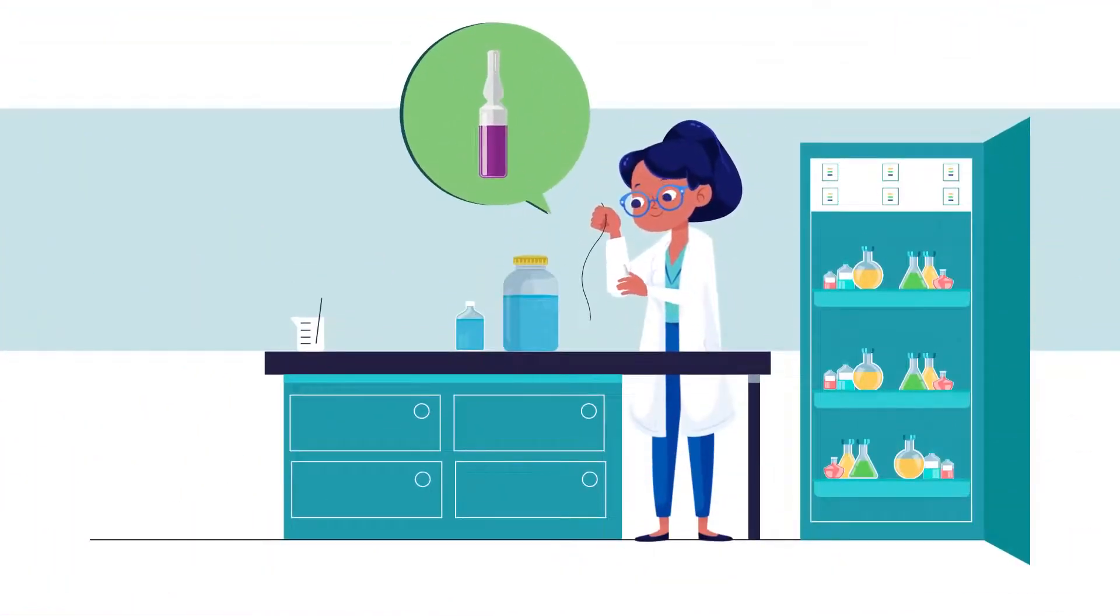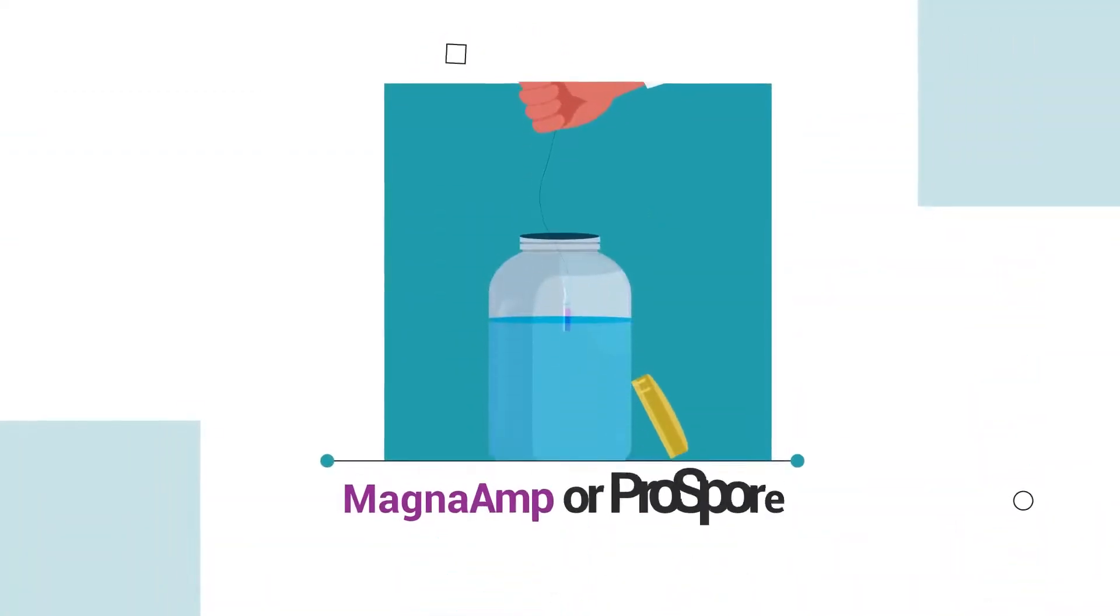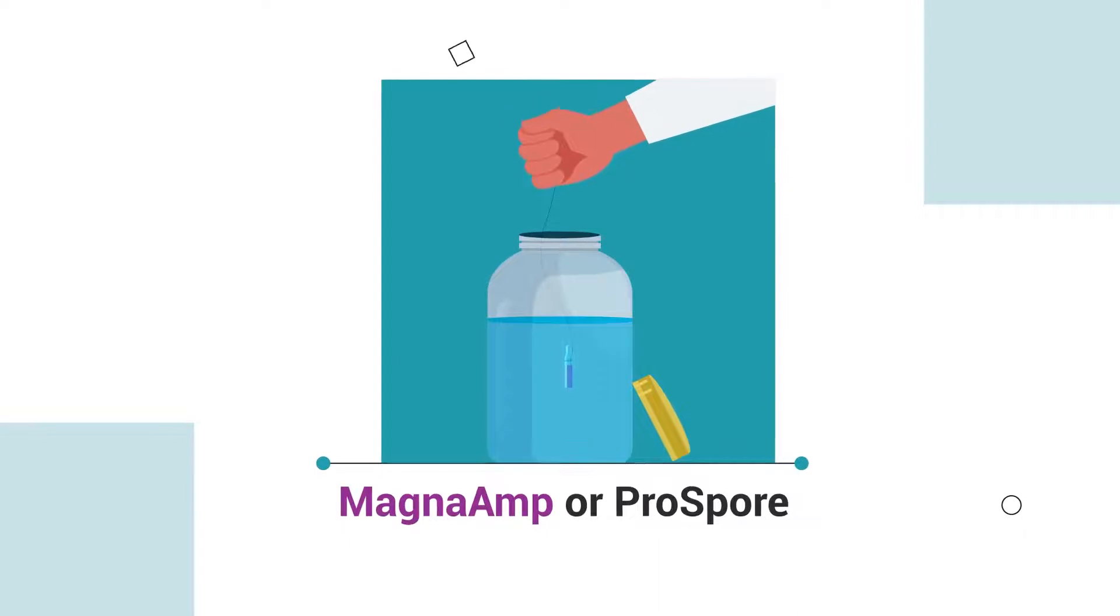To do this, you can take a bendable, thin-gauge wire and wrap it around the neck of the Magna Amp or Prospor ampule and suspend it in the liquid.